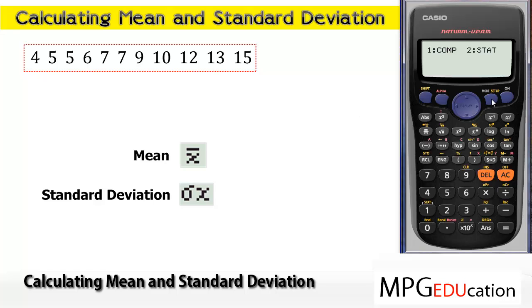To do that, we press the mode button, followed by the number 2, and then the number 1. What you should see appear is a single column that we're going to enter in our scores.